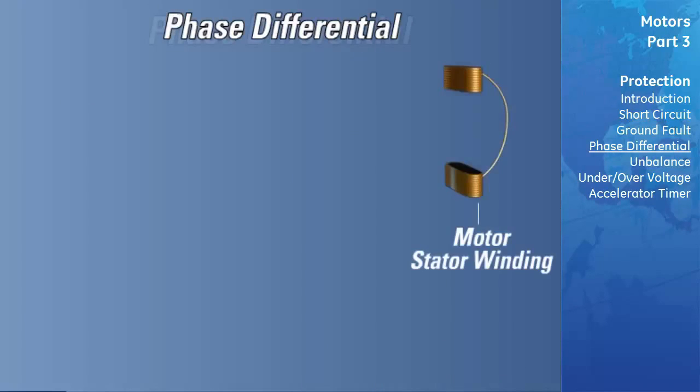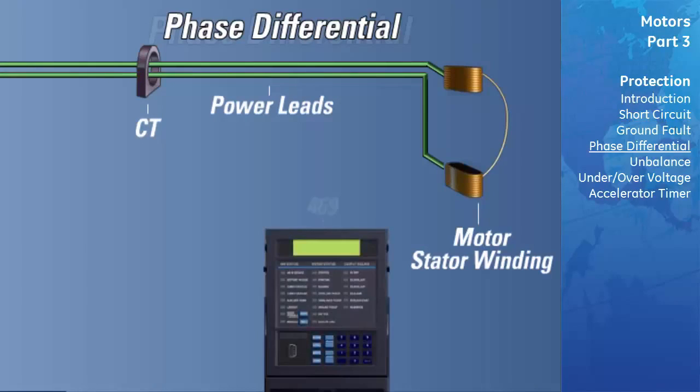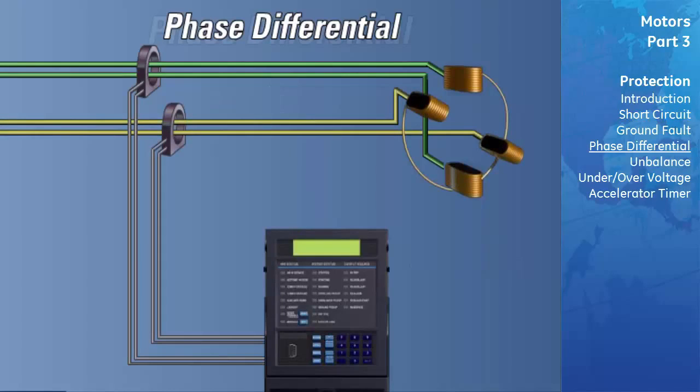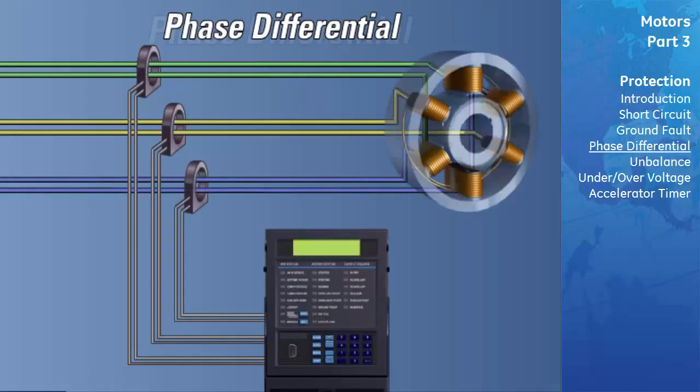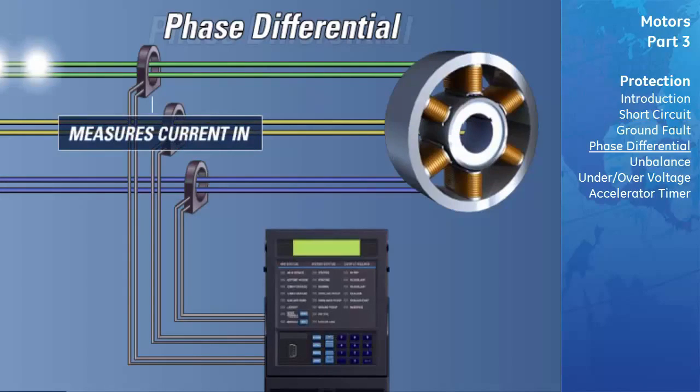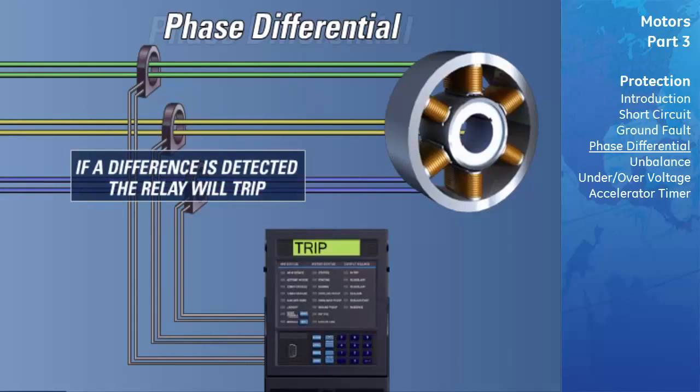Phase Differential Current Protection. This feature consists of three instantaneous overcurrent elements for phase differential protection. The differential trip element function can only be used if both sides of each stator phase are brought out of the motor for external connection, such that the phase current going into and out of each phase can be measured. The differential element subtracts the current coming out of each phase from the current going into each phase and compares the result or difference with the differential pickup level. If this difference is equal to or greater than the pickup level for a period of time greater than a user-specified delay, a trip will occur.